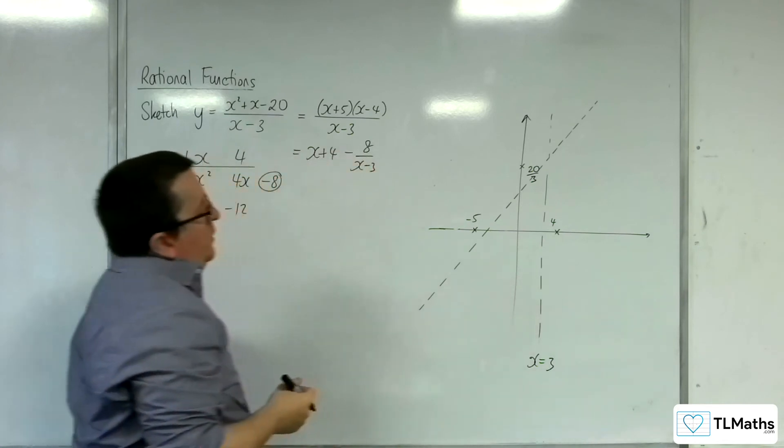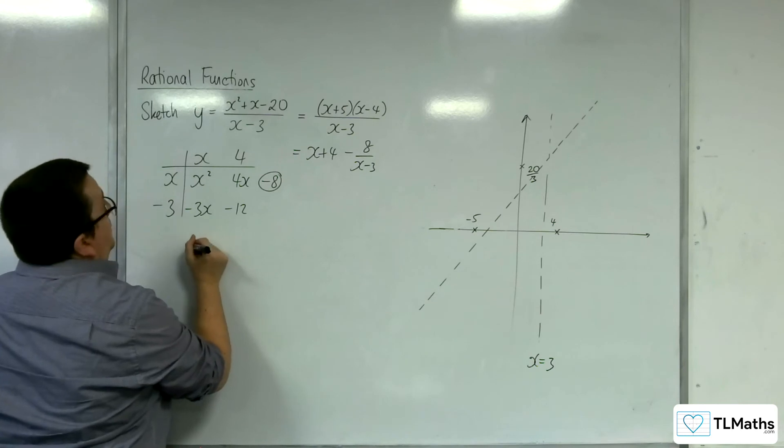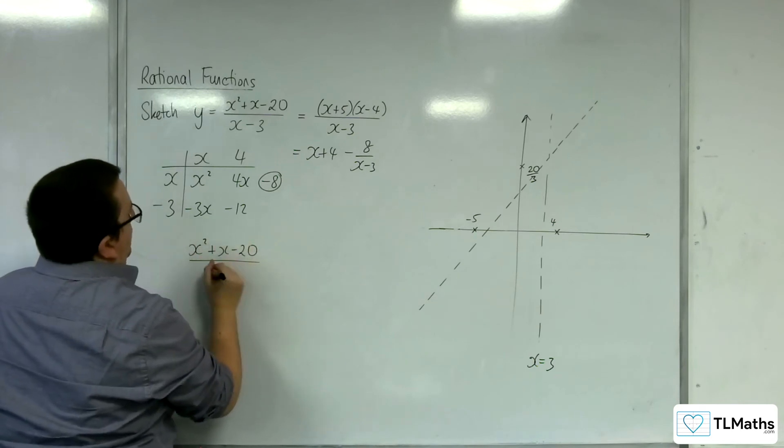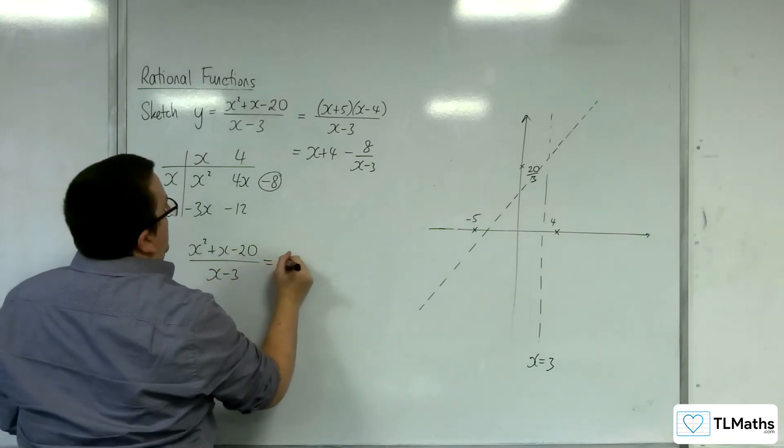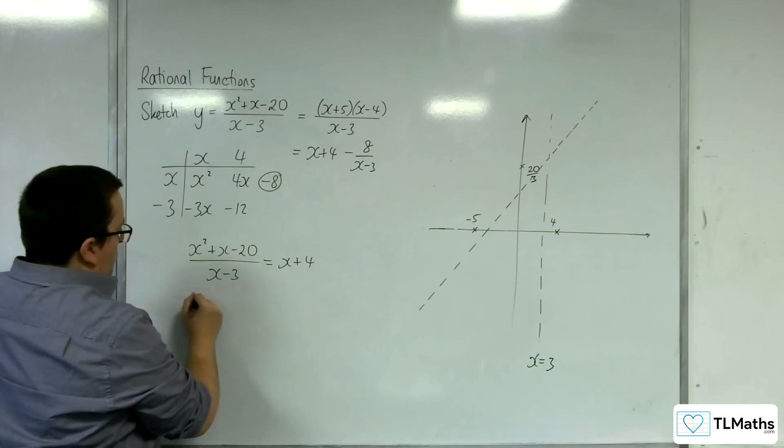So, we also want to check whether the curve crosses the asymptote, the oblique asymptote. So, x squared plus x minus 20, over x minus 3, and we're going to put that equal to x plus 4. So, multiplying up by the x minus 3...